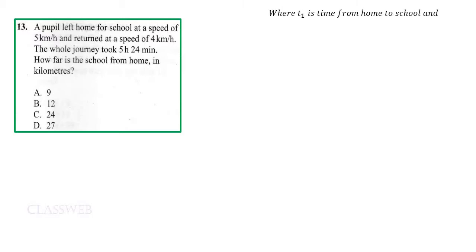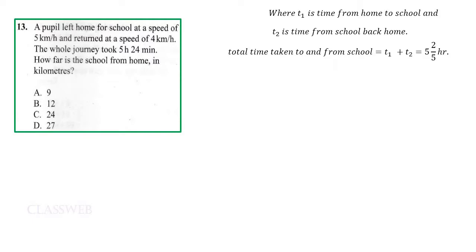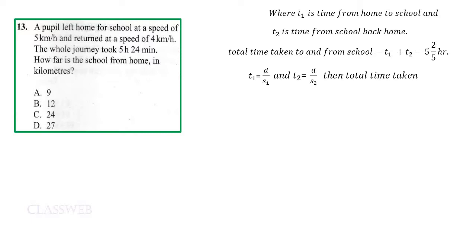t1 is the time from home to school, and t2 is the time from school back home. The total time taken to and from school should therefore equal t1 plus t2, giving us five and two-fifths. Time 1 can be obtained by taking the distance divided by s1, and time 2 by taking the distance divided by s2.